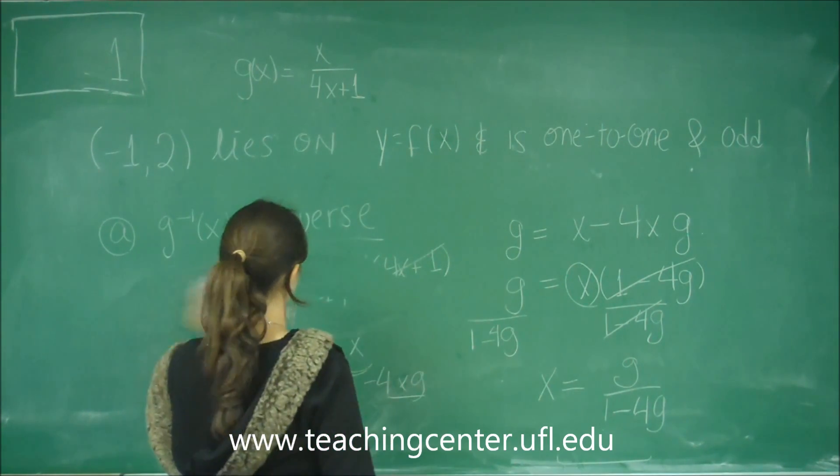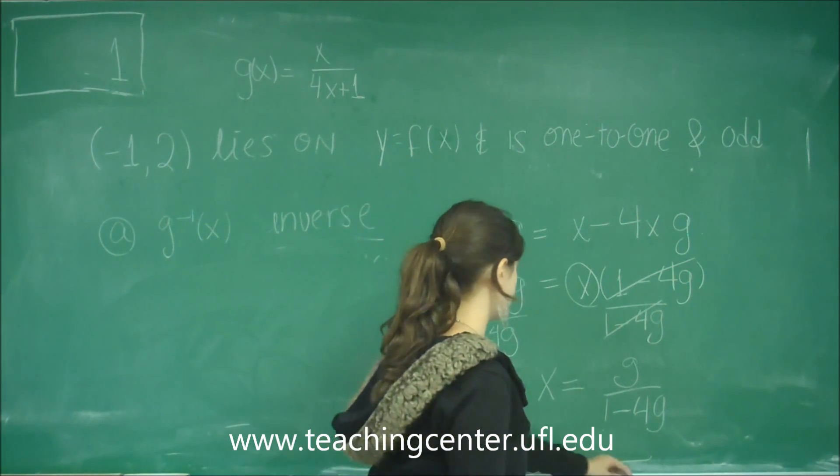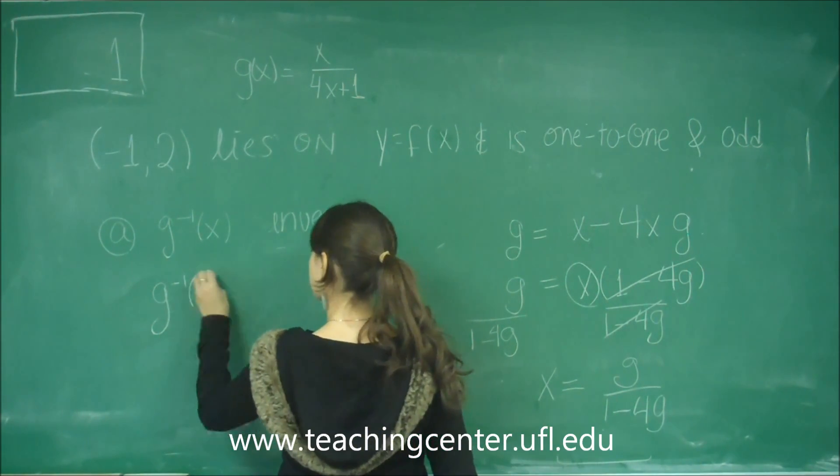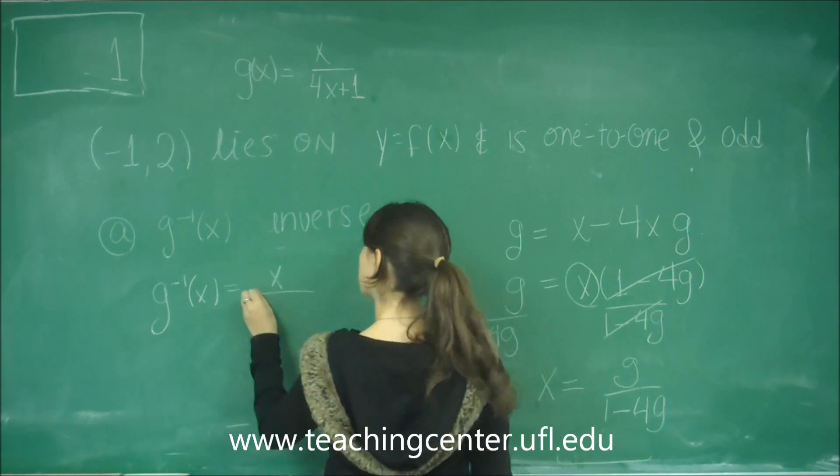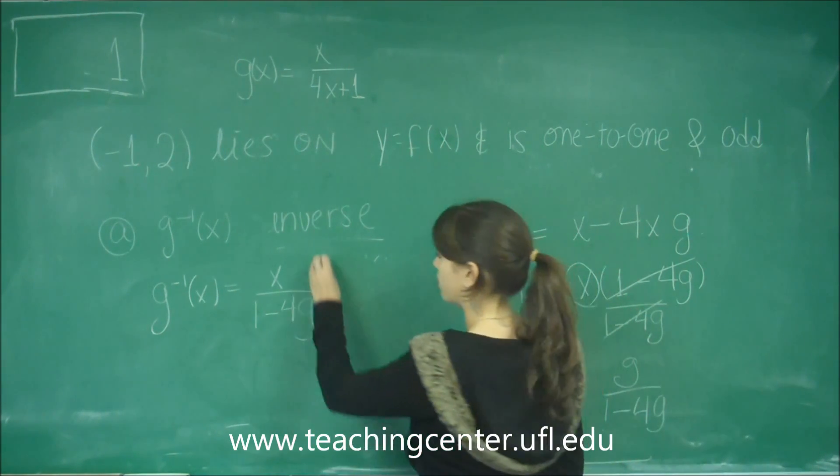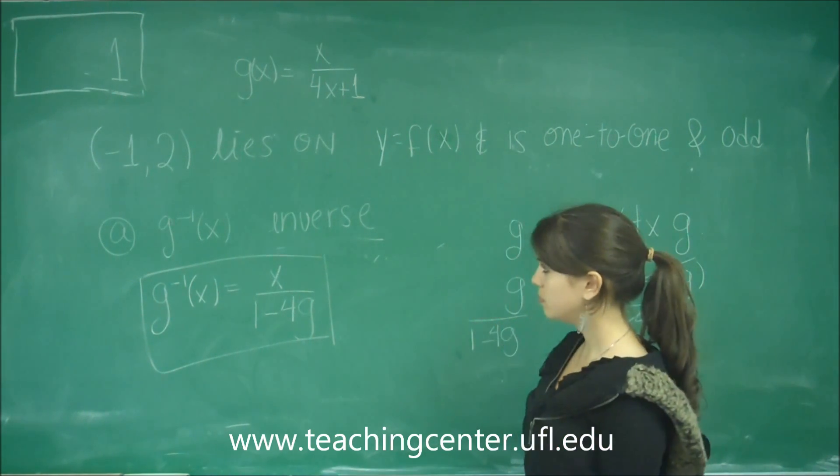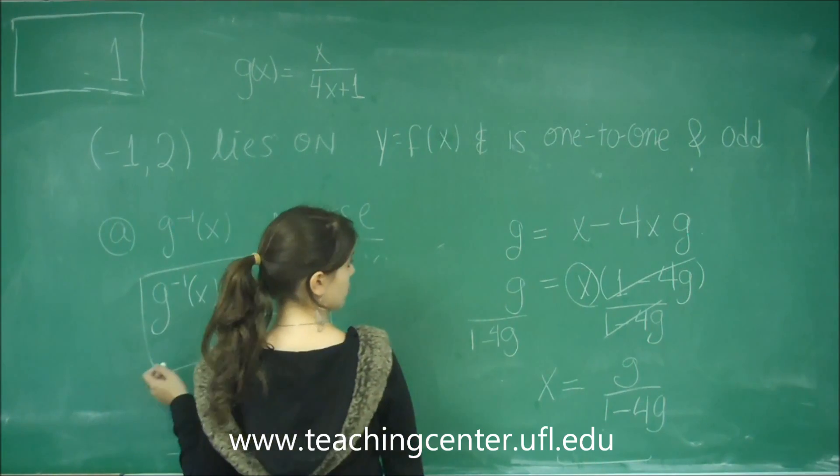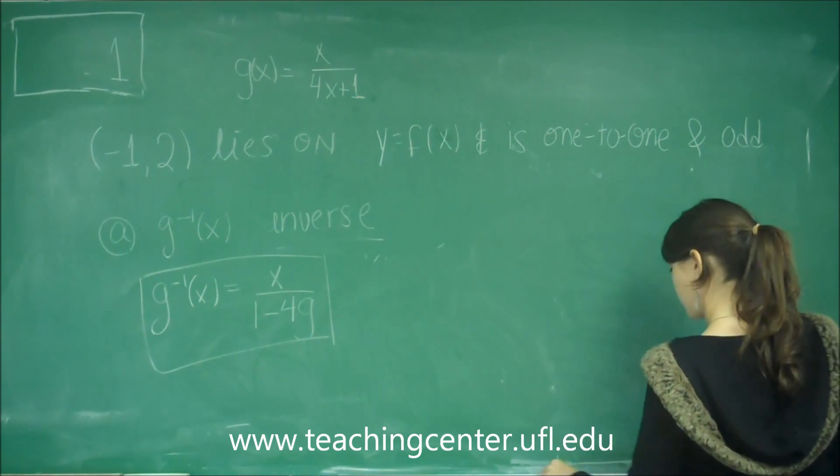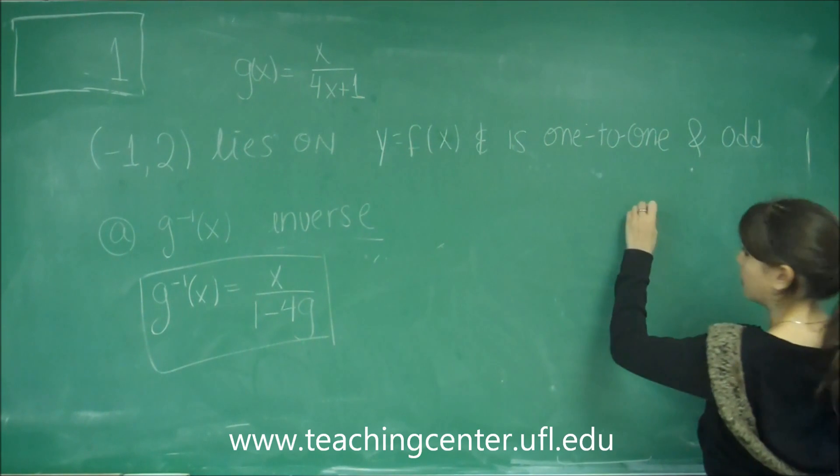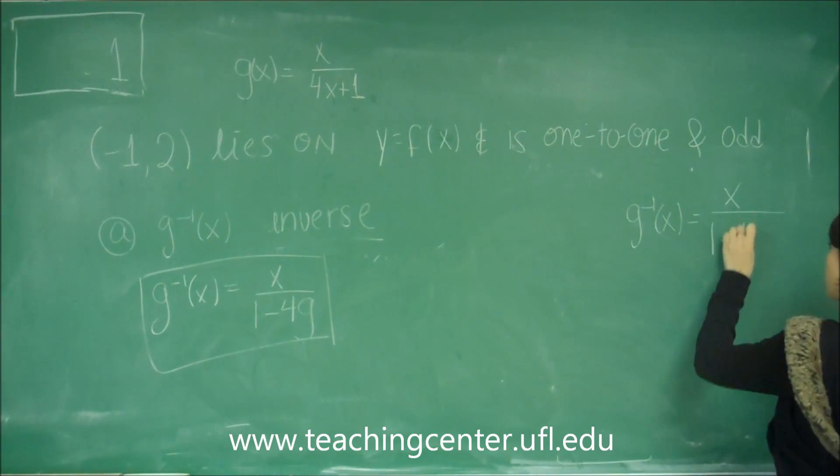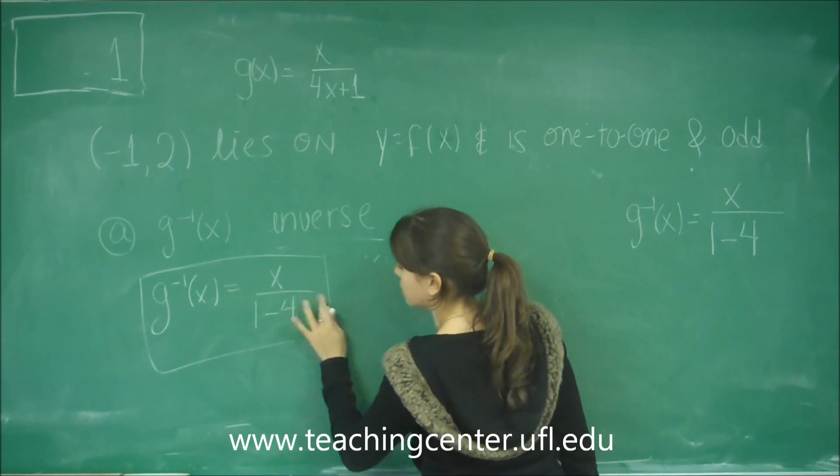And lastly I want to switch the variables then. So now I'm just going to, instead of x I'm going to write g negative 1 of x, and instead of g I'm going to write x. So that is the final solution for part a. And I'm going to go ahead and write it on the side because we're going to need it later. g to the minus 1 of x. Sorry, I actually forgot to switch this to an x. So that's the answer.